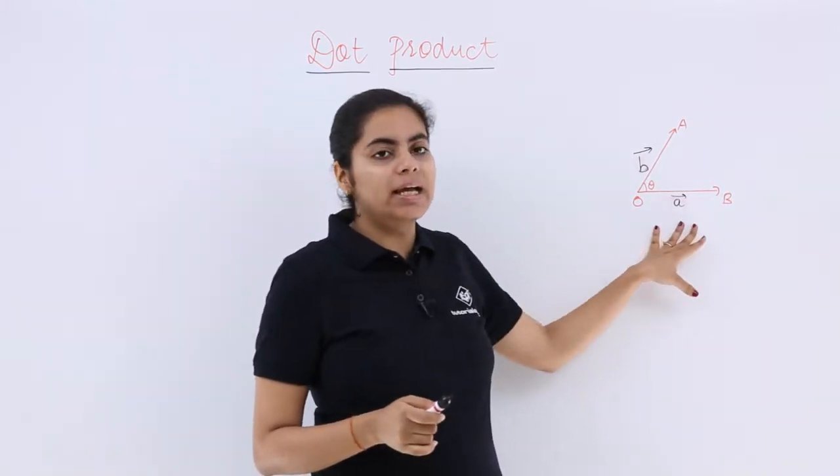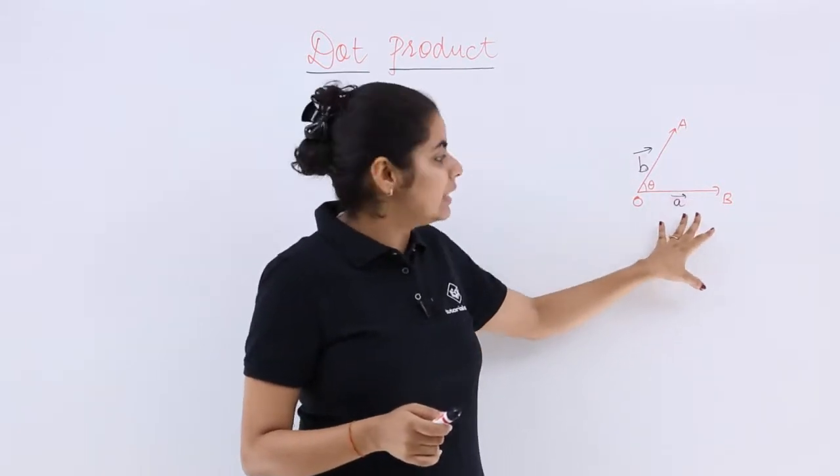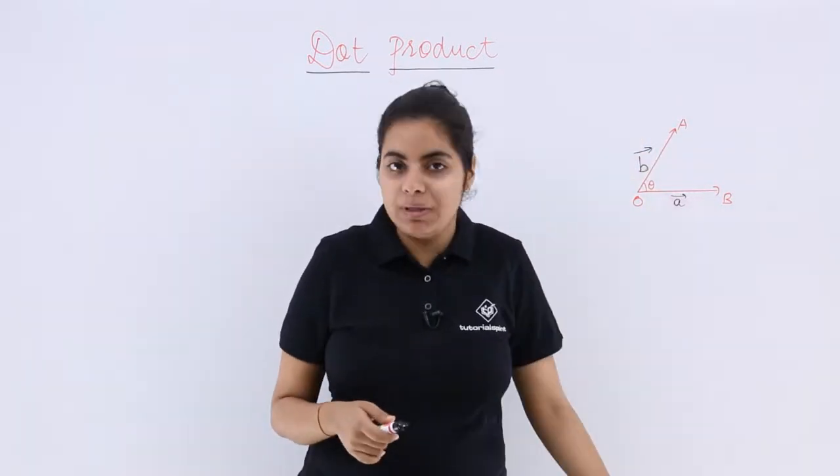Suppose you are studying about this diagram. You have two vectors, OB vector and OA vector. OB vector is a vector, that means small a vector. OA vector is small b vector.